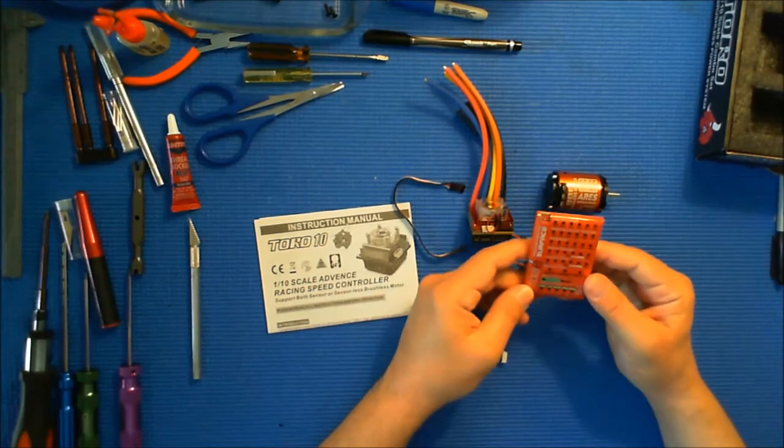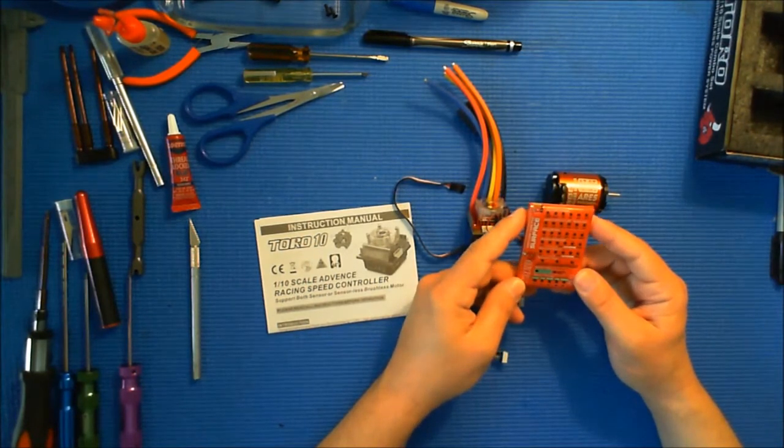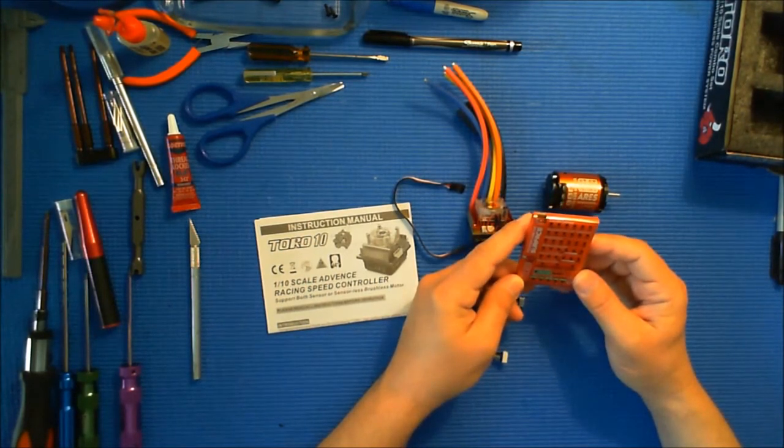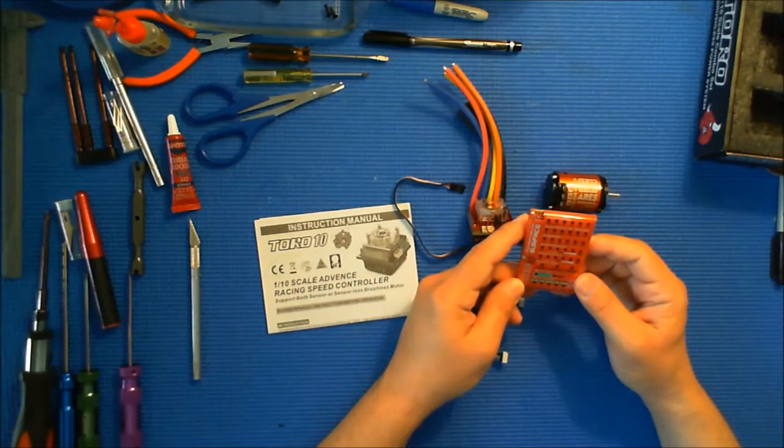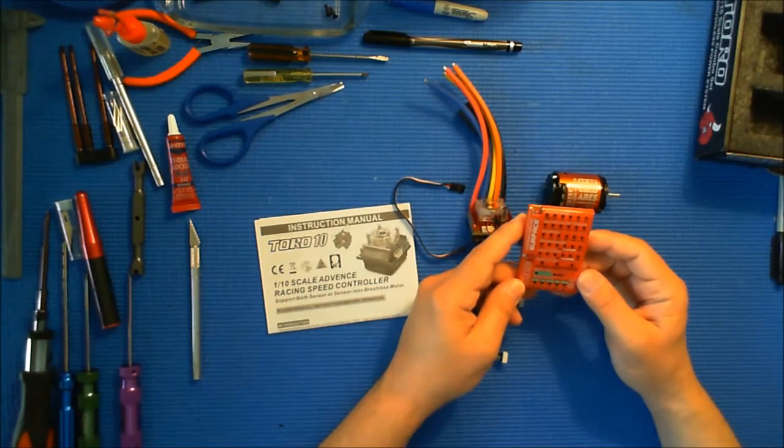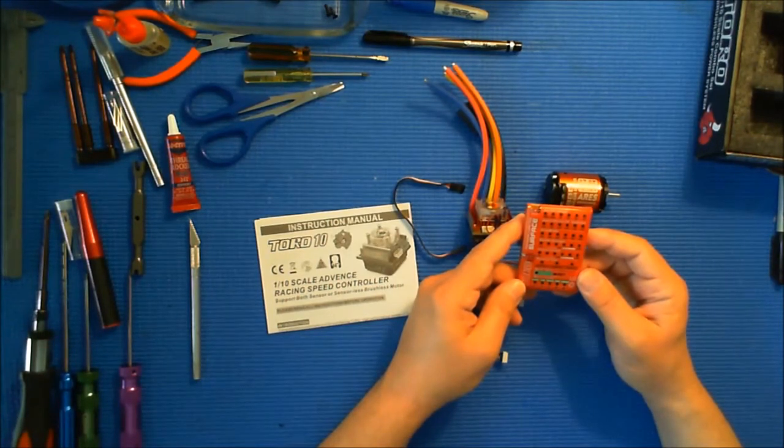And this is our little control box that allows for voltage cutoff, auto lipo cutoff, drag brake, brake strength, punch control, reverse type, motor type and motor timing.